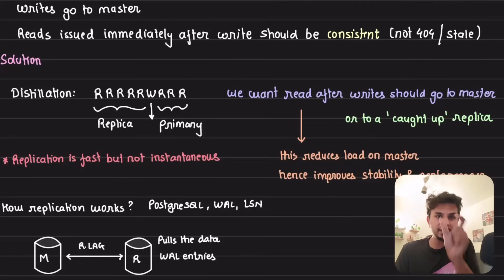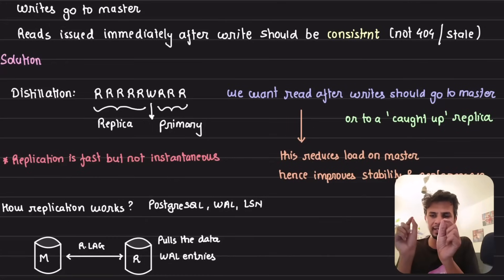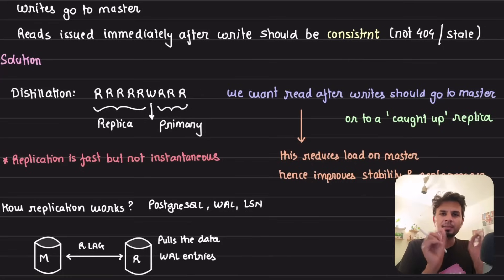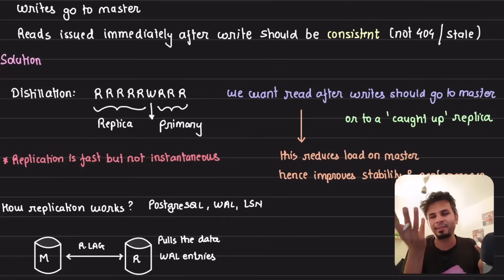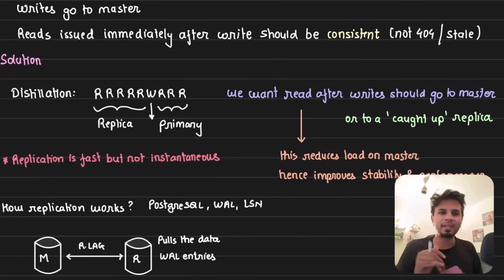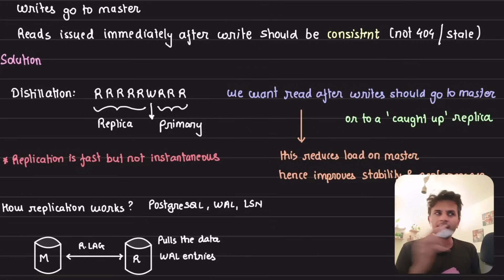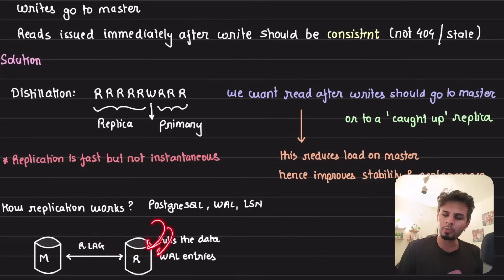When writes go to master, the master applies the writes on its own copy of data and flushes it into a Write-Ahead Log file — an append-only log. The entry contains the SQL query that was fired. Each entry is prepended with an LSN — Log Sequence Number — which is monotonically increasing, telling you this entry happened, then this, then this. The replica pulls each WAL entry and applies it on its own copy of data. Replication is pull-based.